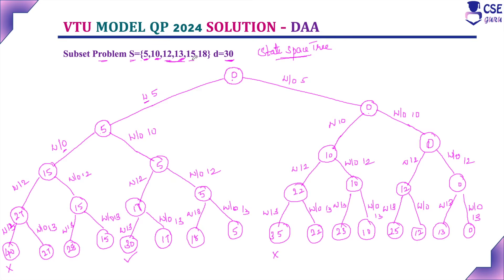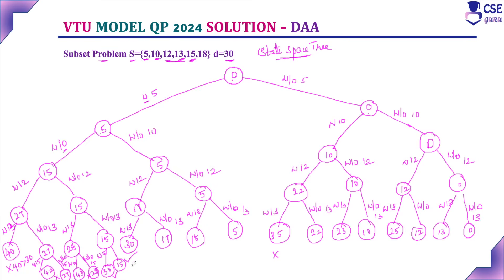Next component is 15. With 15 on 27-branch: 27 + 15 = 42 — dead end. Without 15: 27. With 15 on 28-branch: 28 + 15 = 43 — dead end. Without 15: 28. With 15 on 15-branch: 15 + 15 = 30 — this is a solution! Without 15: 15. With 15 on 17-branch: 17 + 15 = 32 — dead end. Without 15: 17. With 15 on 18-branch: 18 + 15 = 33 — dead end. Without 15: 18.